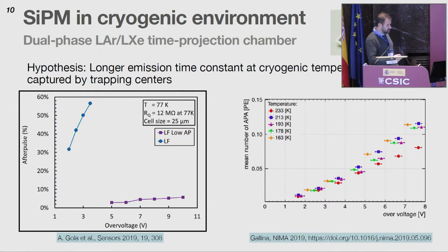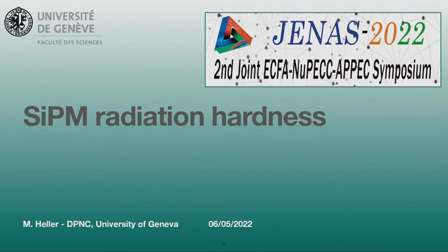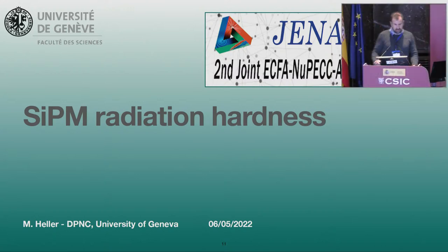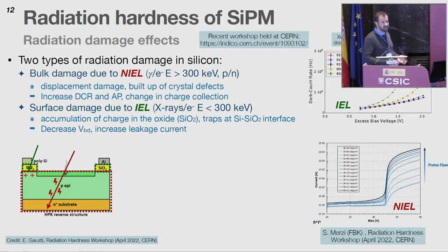To fight after-pulsing, FBK developed a slightly modified low-field version that again kills after-pulses, making it a very interesting sensor. Radiation hardness is one of the main R&D topics for silicon PMs. There are two types of damage: bulk damage — displacement damage in the crystal adding acceptor and donor levels, increasing dark count rate and after-pulse rate — and surface damage, which accumulates charge at the surface, distorts the field, and changes the breakdown voltage.